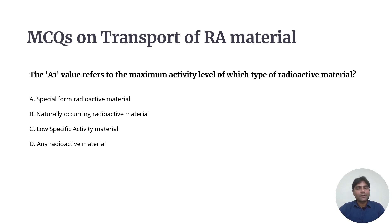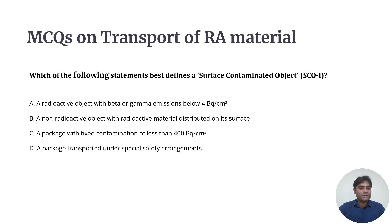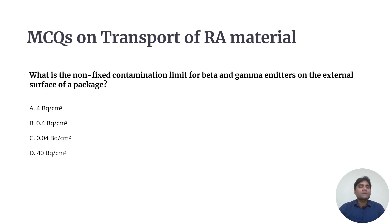Question 3: The A1 value refers to the maximum activity level for which type of radioactive material? It was special form radioactive material, so Option A would be correct. Question 4: Which of the following defines a surface contaminated object (SCO1 or SCO2)? The correct answer is Option B — a non-radioactive object with radioactive material distributed on its surface, with fixed contamination of less than 400 becquerels per centimeter square.